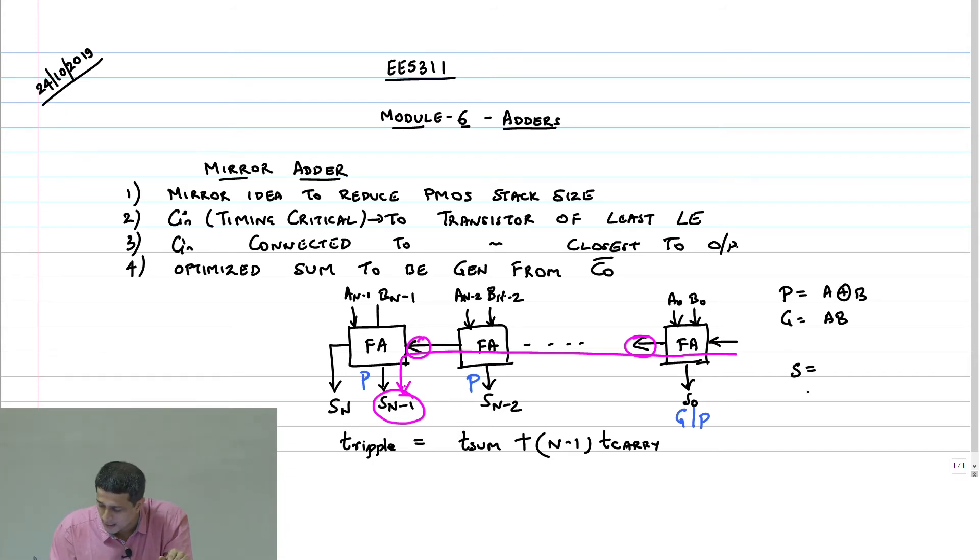Now, can you write the sum and carry in terms of this, in terms of p, c_in and g? The sum is what: p XOR c_in, correct. a XOR b XOR c_in, a XOR b is p, therefore it controls p XOR c_in. What about carry out? Yes, either the carry is going to be propagated, which is controlled by the signal p, or it will be generated. The delete you do not have to take care, because delete is the case when both p and g are 0, output will automatically be 0. So this is nothing but g plus p times c_in.